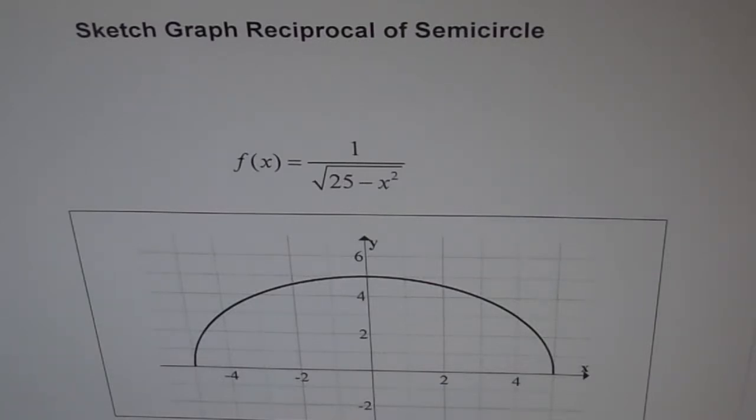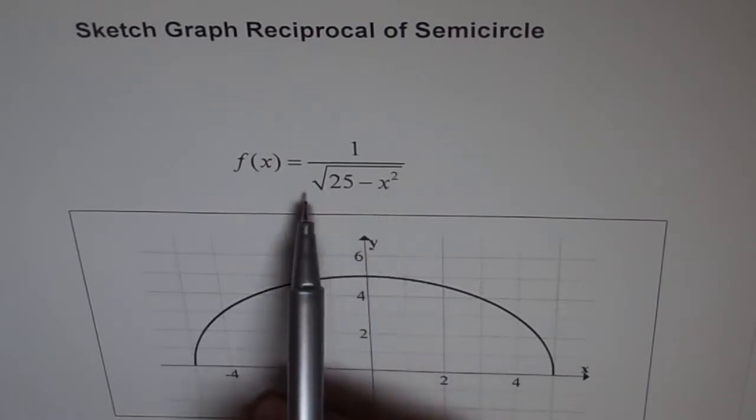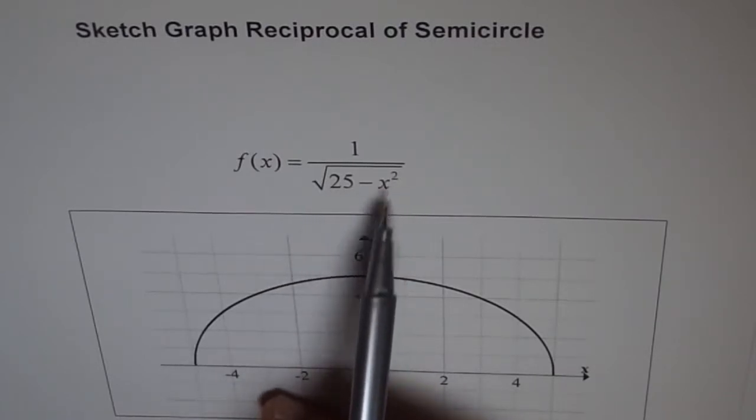Here we have f of x equals 1 over square root of 25 minus x square. Look at it carefully. It is not 25 minus x, it is 25 minus x square. Now whenever I see this kind of problem in the test, most of my students get puzzled and they come asking for solutions. So I thought, let me put it on the video. Let's first understand this part of the function, square root of 25 minus x square.